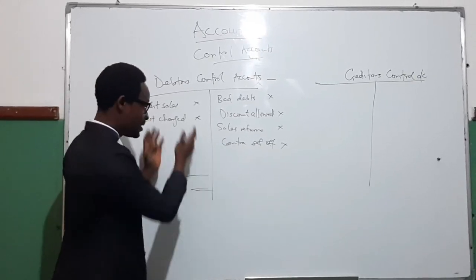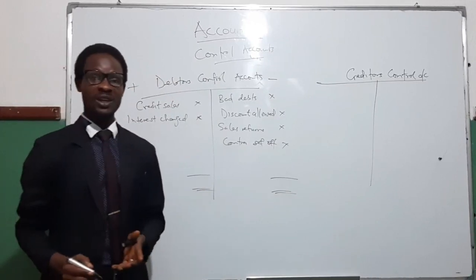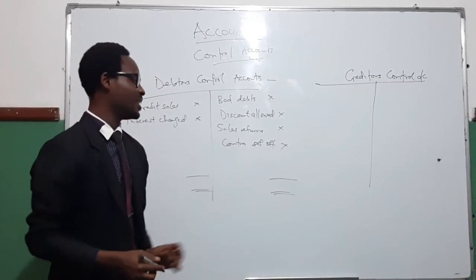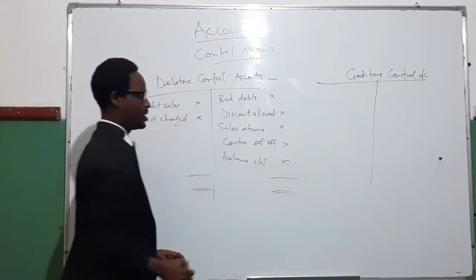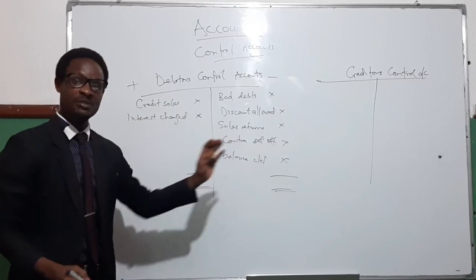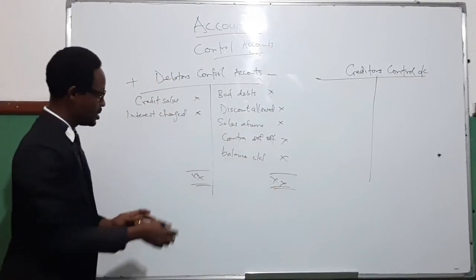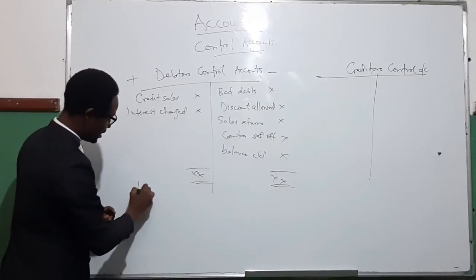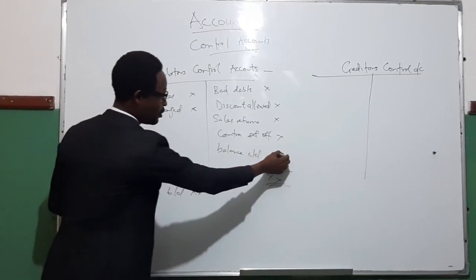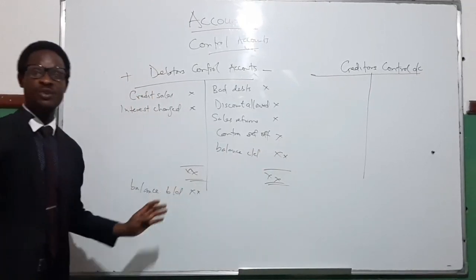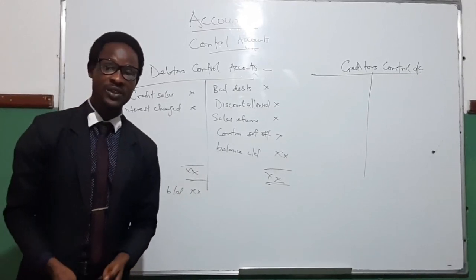At the end of the period, we add up the left-hand side and add up the right-hand side. The side that is smaller — which is most times the credit side — will carry the balance down. This balance is the difference between the two sides, so we add it up to make both sides equal. Then we bring this balance down for the beginning of the next period; the same amount carried down is now brought down, and that will be the value of debtors at the end of the period.